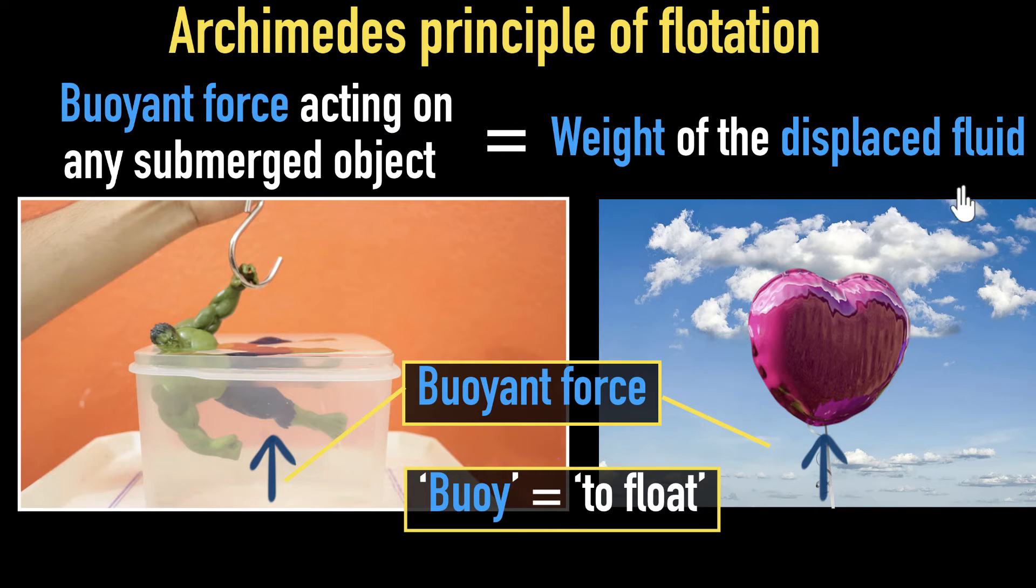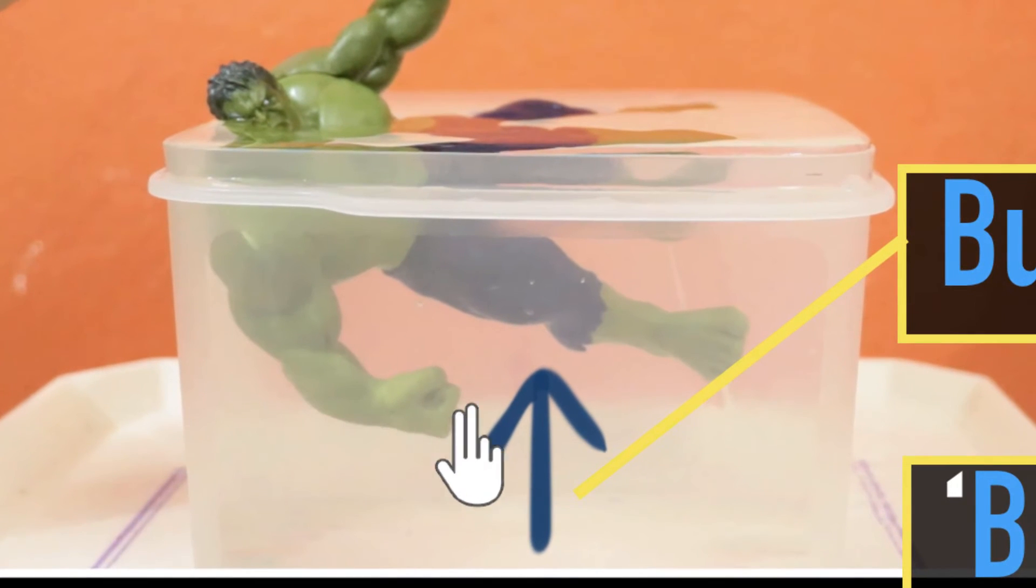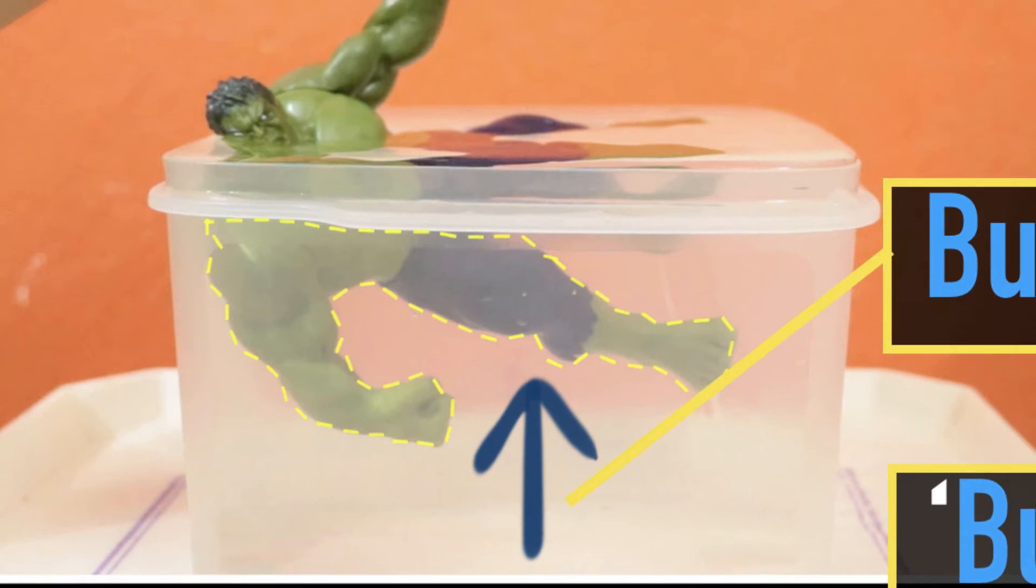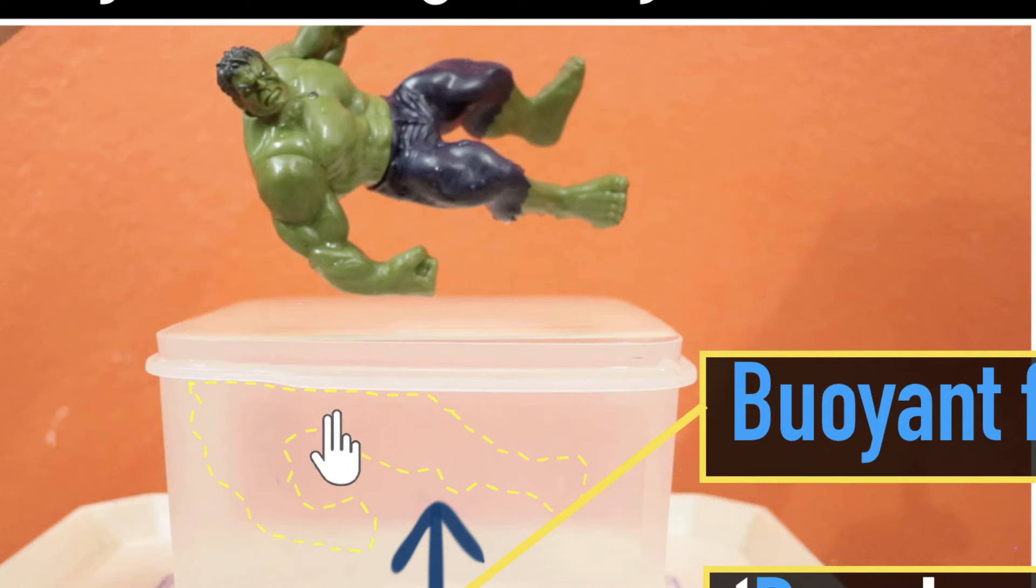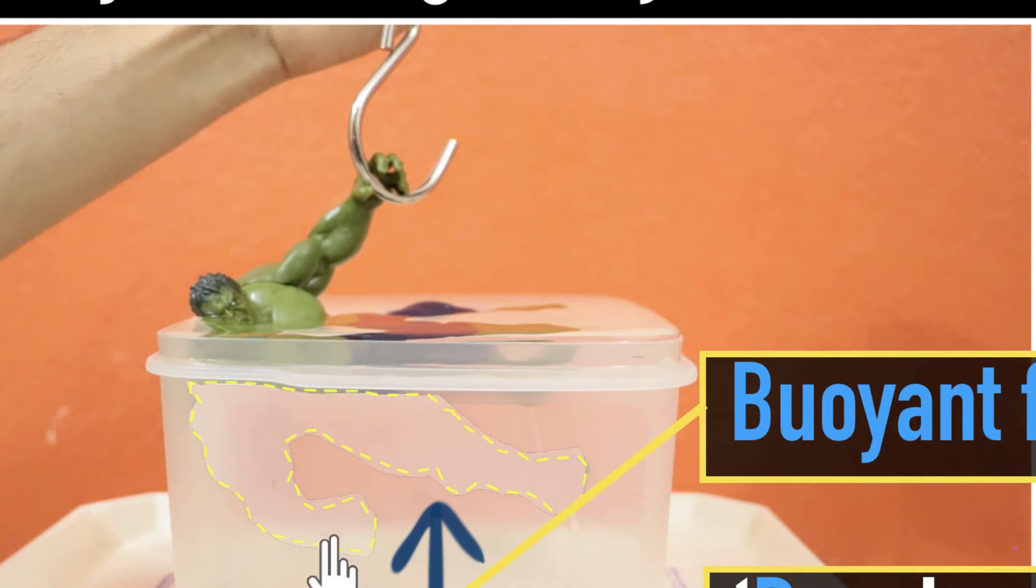Well, if we come back to our Hulk—or sorry, Archimedes—we see that right now, this much of his muscular body is underwater. But before he stepped inside, that space was occupied by water. So this means once Archimedes goes underwater, that much water should move out to make space for his body to come over there. So it should move out. Where does it go?